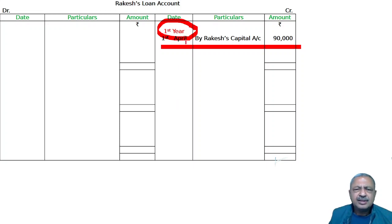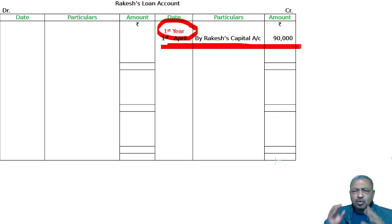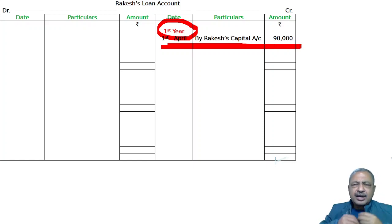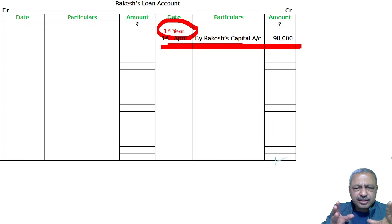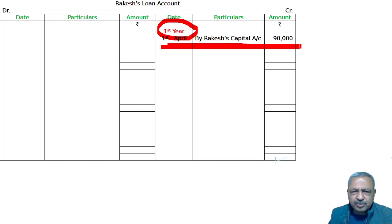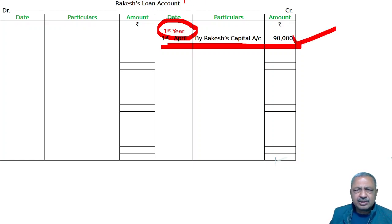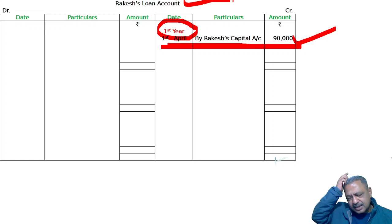When any partner retires, the balance amount — their share of payment in the firm — the capital account will be transferred to the loan account. Rakesh's capital account is debited and transferred to Rakesh's loan account.